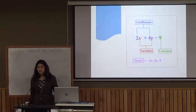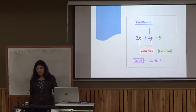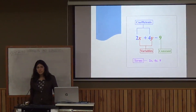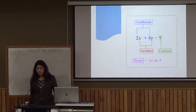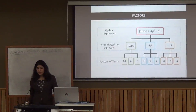In the algebraic expression 2x plus 4y minus 9, we see that we have variables x and y. For 2x, the coefficient is 2. For 4y, the coefficient is 4, and the constant term is 9. Segregating the terms, we get 2x, 4y, and 9.